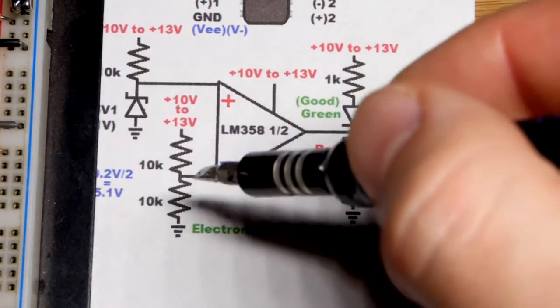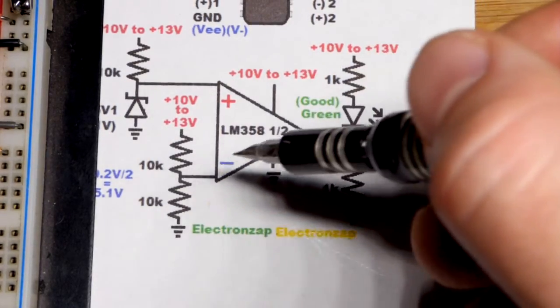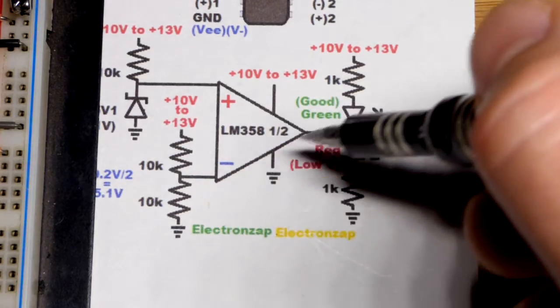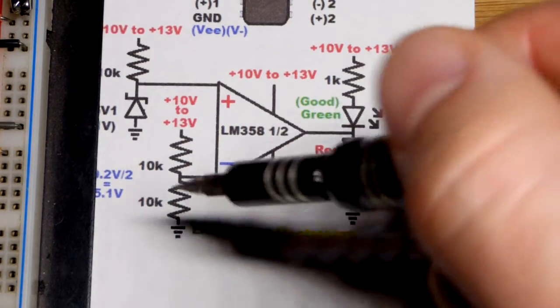So above about 10.2 volts we got above 5.1. So that's higher which means the output will be lower. The green LED will light up.